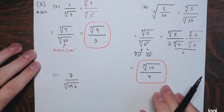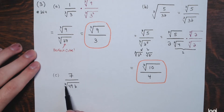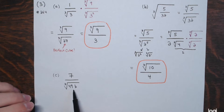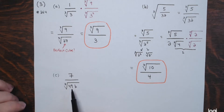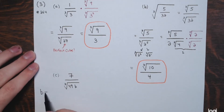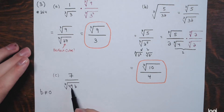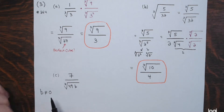Part c: we have 7 divided by the cube root of 49B. It's a cube root — an odd root — so B can be any real number, positive or negative. The only restriction is B can't be 0, because then the cube root of 0 would be 0 in the denominator, making the expression undefined.